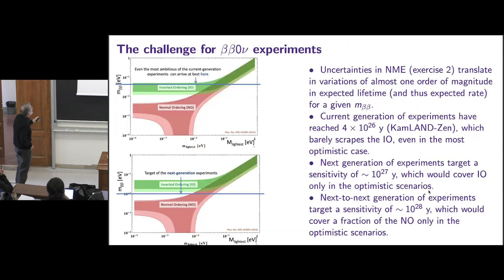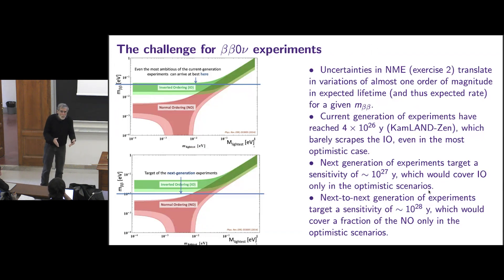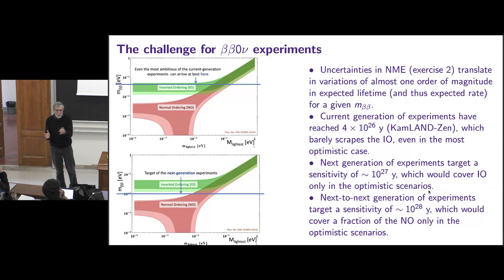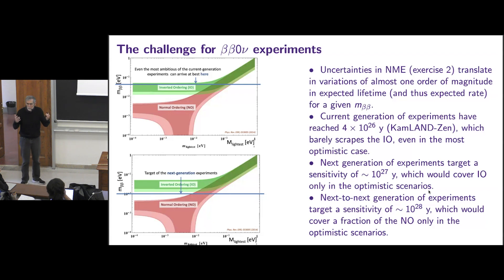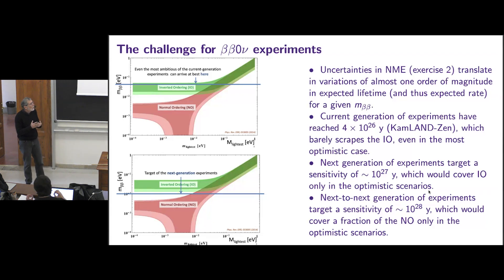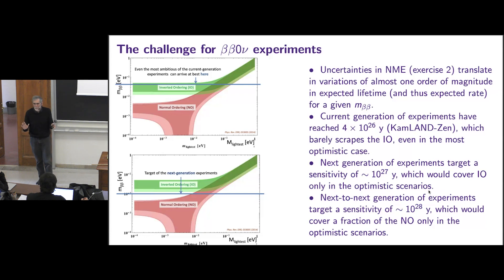What we're going to be talking about is that right now we are in a few times 10^26 years, led by two experiments. These two experiments that are leading the field are at two extremes of the game — one is GERDA, the other is KamLAND-Zen, and the approaches are completely different. We are in the few times 10^26 game. The goal of the next generation experiments is 10^27 years. Nobody is yet there. The goal of the next-to-next generation is 10^28 years.